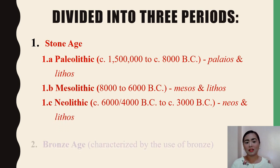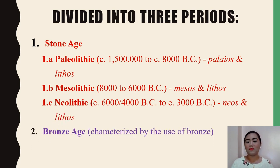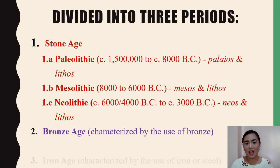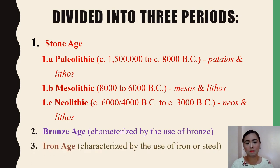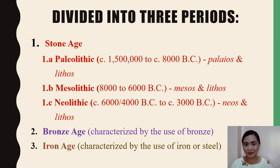The second major division of the prehistoric period is the Bronze Age, characterized by the use of bronze. And the last prehistoric period is the Iron Age, characterized by the use of iron and steel.